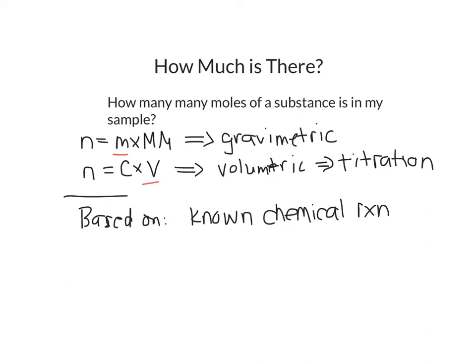If I want to do a volumetric analysis using titration, I'm going to go at it a little bit differently. So for instance, I might want to know how much of a particular acid, or H+, is present in my sample. So my sample contains an acid, and I know that acids and bases react with one another.